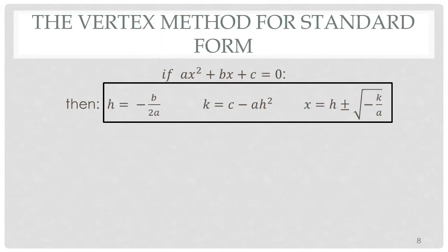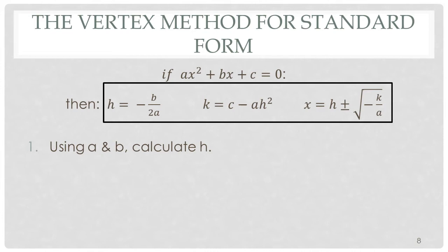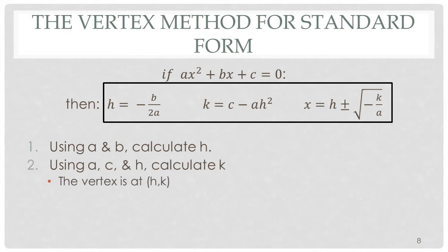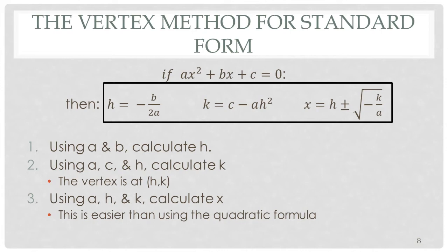Here is the vertex method for the standard form. The formulas are: h equals minus b over 2a, k equals c minus a h squared, and the vertex root equation x equals h plus or minus the square root of minus k over a. Using this method, all you have to do is take a and b and calculate h, then use a, c, and h to calculate k — and notice the vertex is at h, k. Now we have a, h, and k, and we can find x. I believe this will be much easier than using the full-blown quadratic formula.